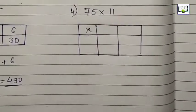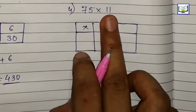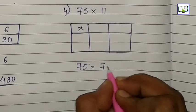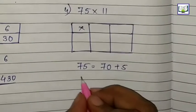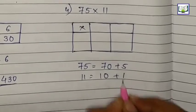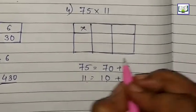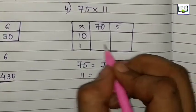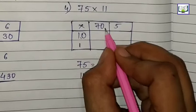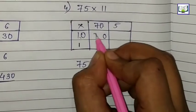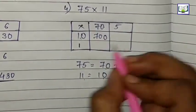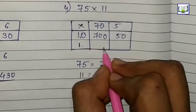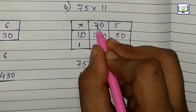Let's see number 4: 75 multiply by 11. We have to break both. 75 means 70 plus 5. 11 means 10 plus 1. So 70, here is 5, this is 10, and this is 1. Let's solve first with 10. 10 times 0 is 0, 10 times 7 is 70. Now 10 times 5 is 50. Now with 1: 1 times 0 is 0, 1 times 7 is 7, 1 times 5 is 5.